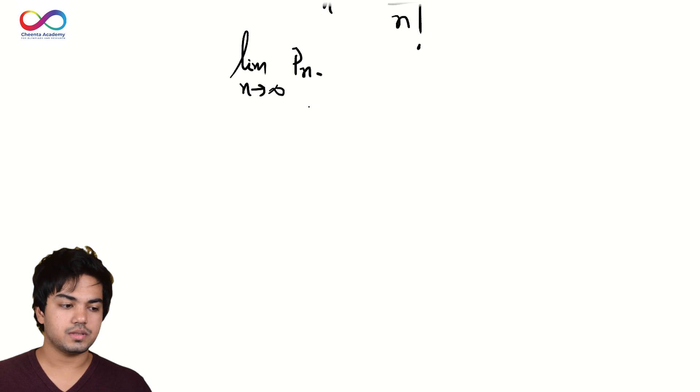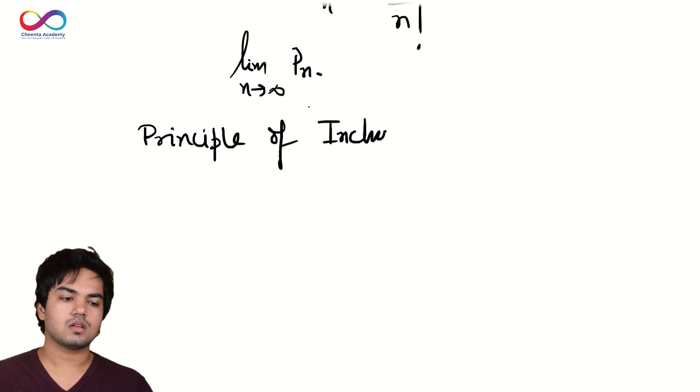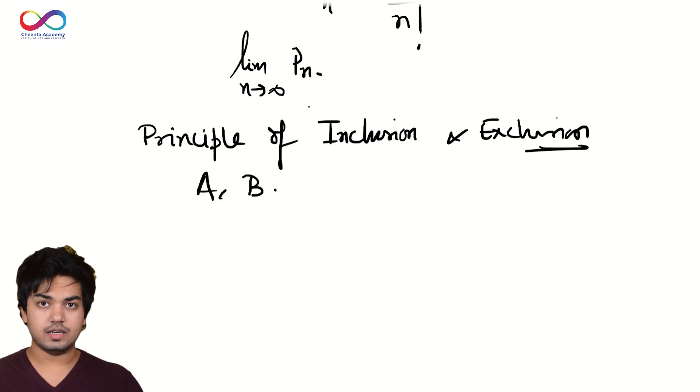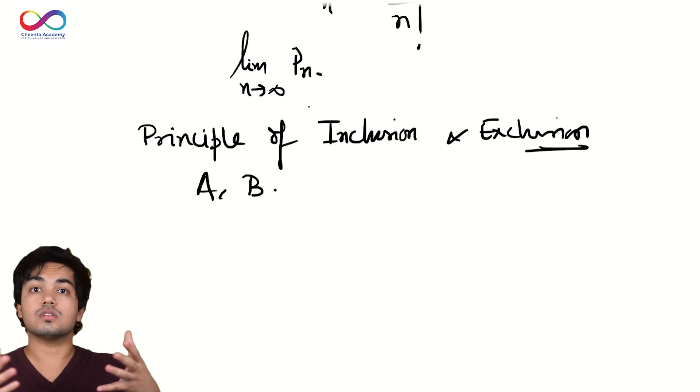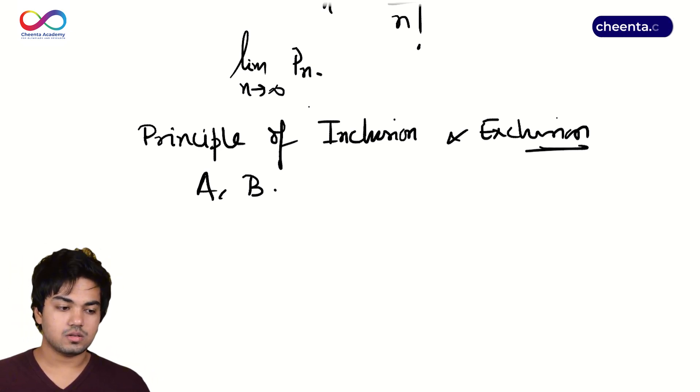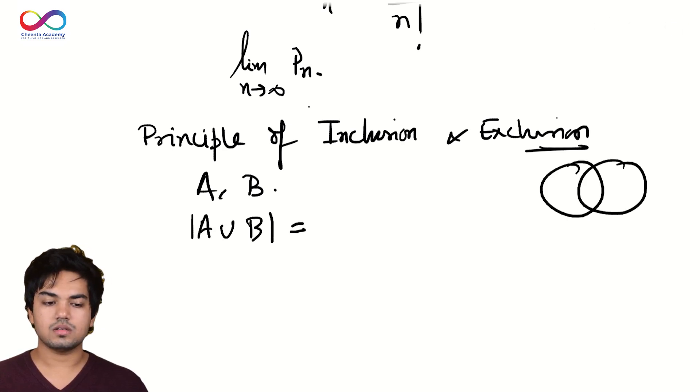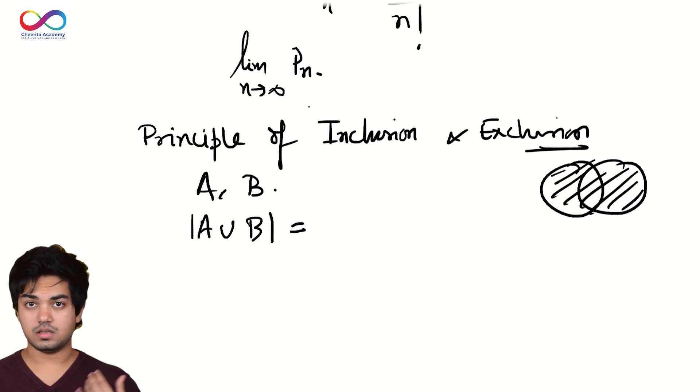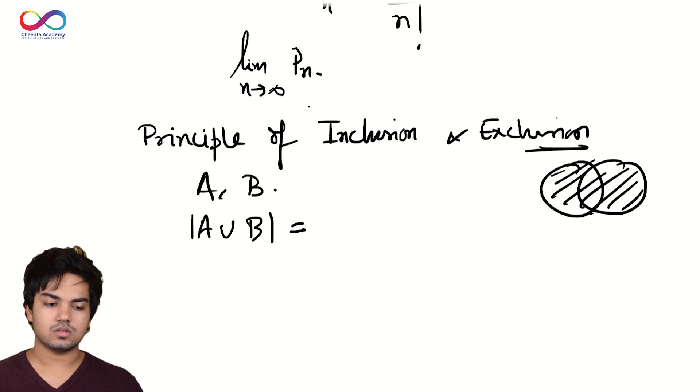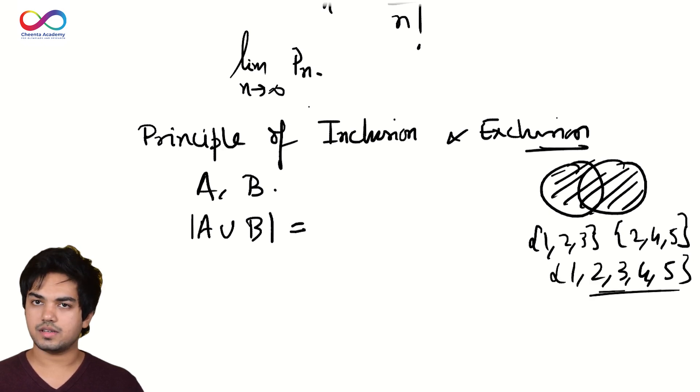So let's calculate the number of derangements. This uses something known as the principle of inclusion and exclusion, which says something very simple in the base case at least. So if I give you two sets A and B, which may or may not have an intersection, they belong to the same universe, universal set. And if I asked you what is the size of the union of A and B? If I had one, two, three and say two, four, five, what is the total number of elements? It's one, two, three, four, five. The answer is five.